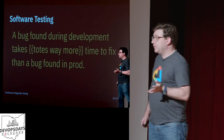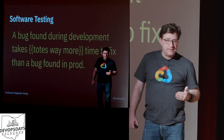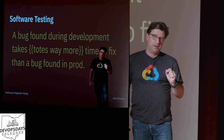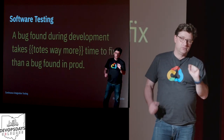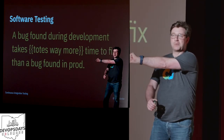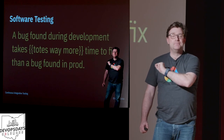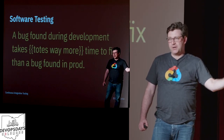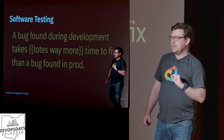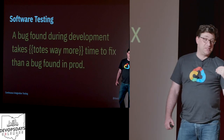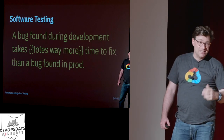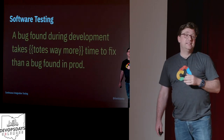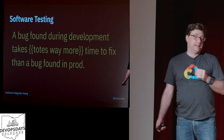Research done by NIST and IBM shows the cost of fixing a bug found in production is many times higher than the cost of fixing a bug found in dev. Different studies have found different numbers — I've seen 6x, I've seen 30x, I've seen 100x. Regardless of what the multiplier is, it's a lot.